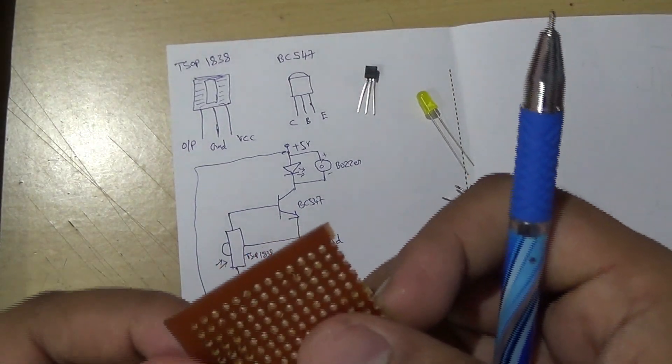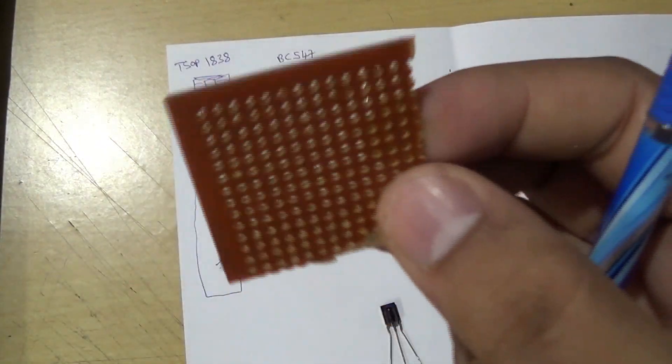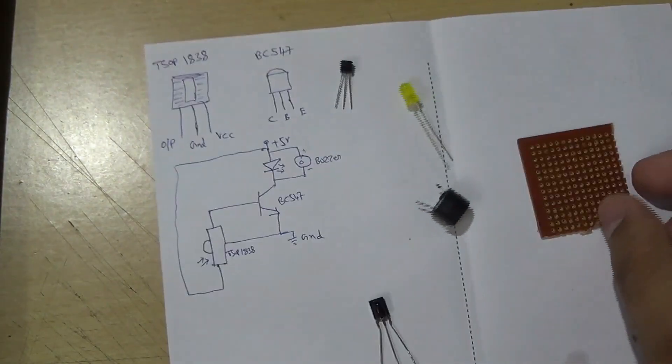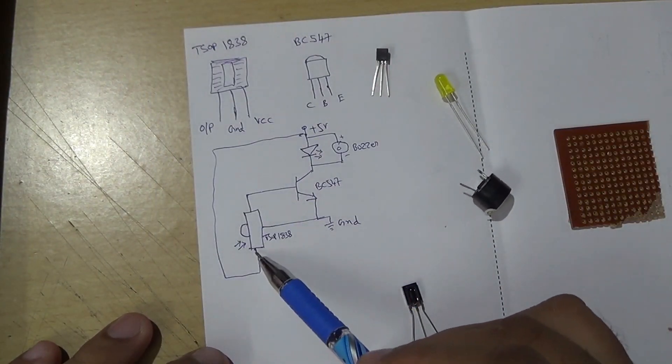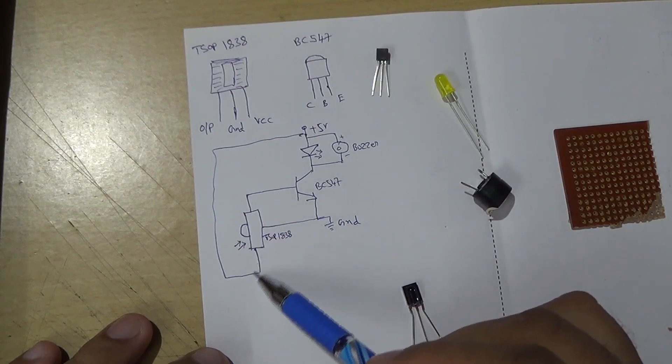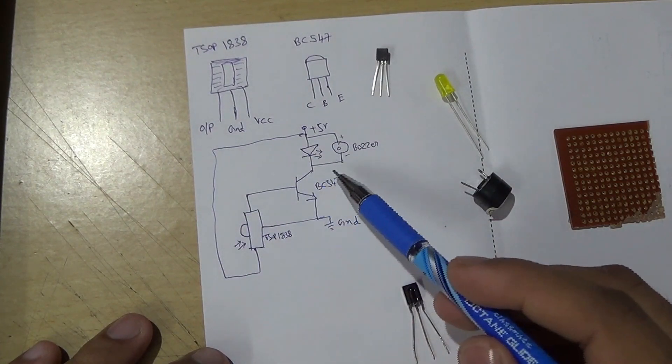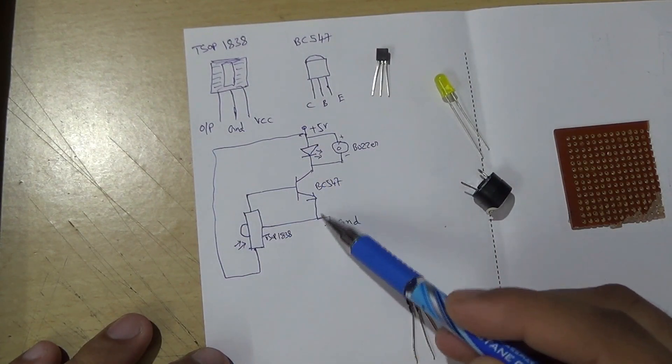And you need one small general purpose PCB. Okay, let's see the circuit diagram. The output from the IR sensor is connected to the base of the transistor, and in the collector we have connected the buzzer and the LED. It's a very simple circuit.